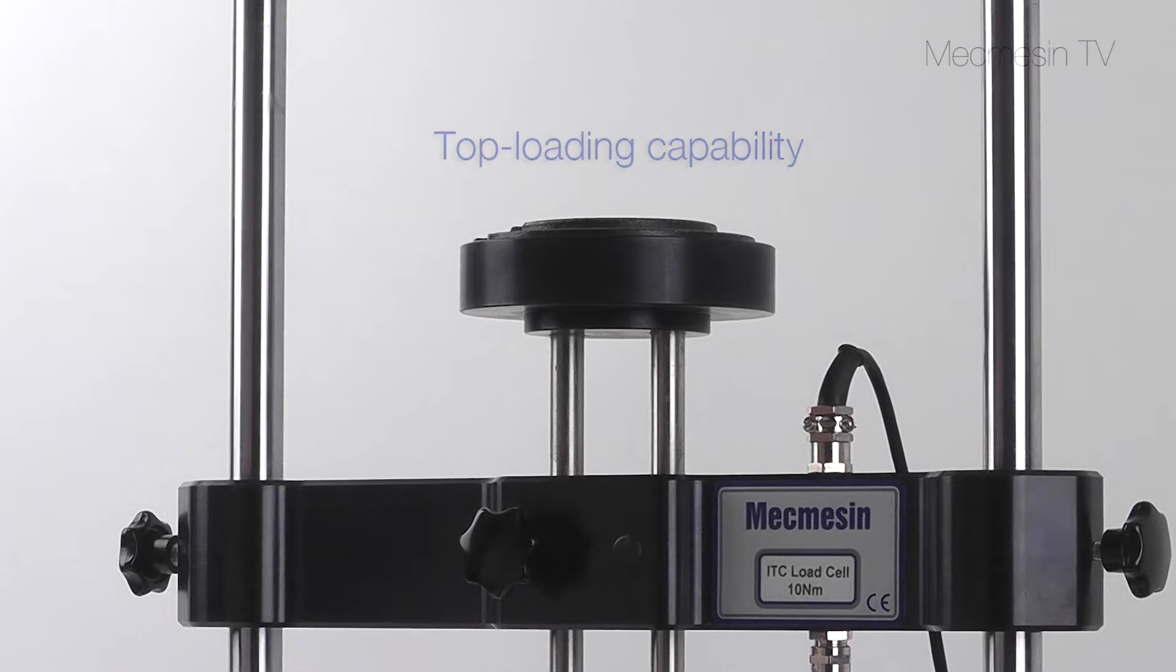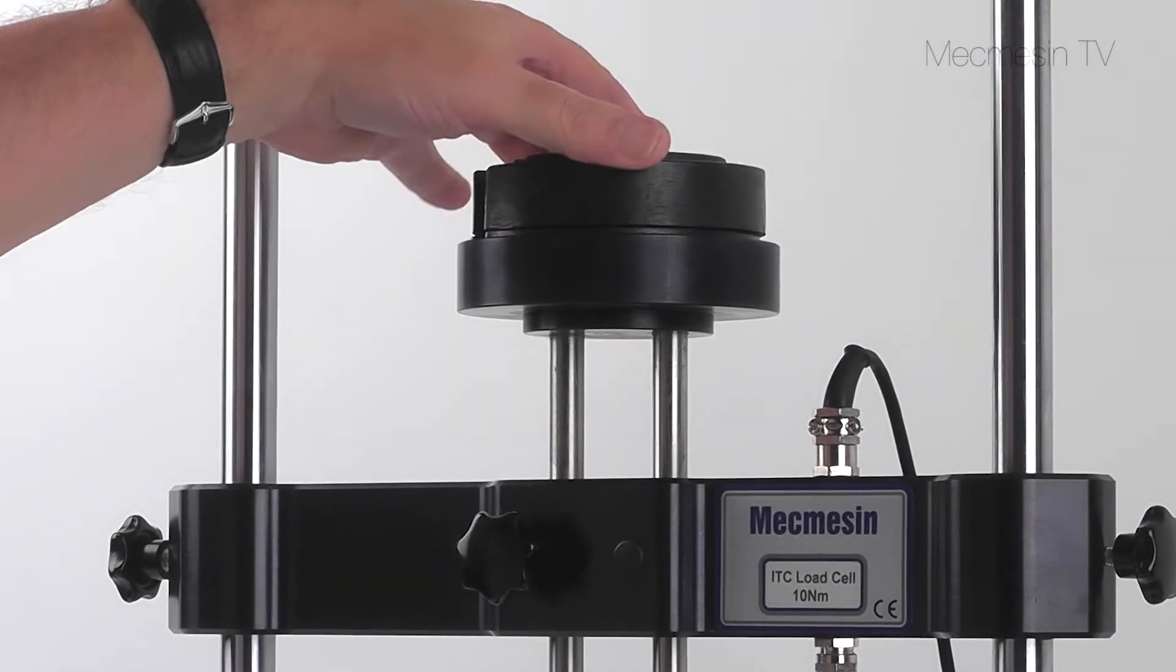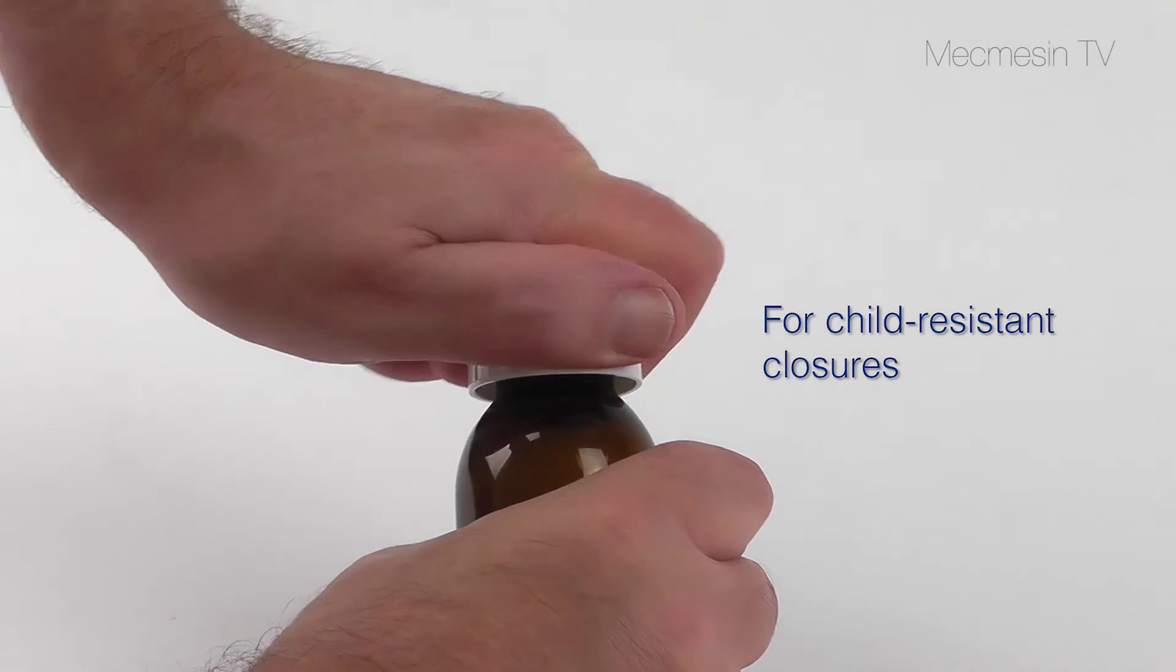A top-loading facility is available to provide a constant downforce, for example when measuring child-resistant closures.